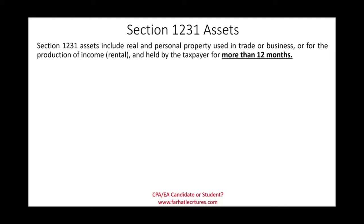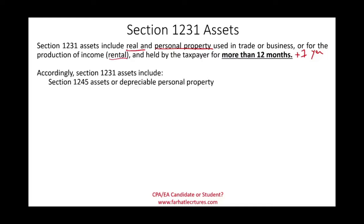Section 1231 assets include real and personal property used in a trade or business or for the production of income, including rental property, held by the taxpayer for more than one year. Section 1231 breaks into two subsections: Section 1245 for personal property — furniture, desks, computers, vehicles, trucks — movable assets, and Section 1250 for real property.